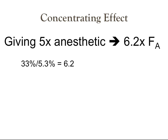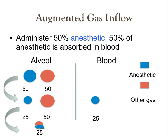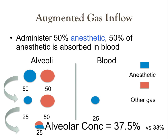With augmented gas inflow, still using 50% anesthetic and 50% uptake, the 25 parts of anesthetic removed from the alveoli are replaced with 25 parts of 50% anesthetic, giving a new alveolar concentration of 37.5% compared to 33% without augmented inflow. Thus, 5 times the FI leads to 6.8 times greater FA, compared to 6.2 times without augmented gas inflow. The cycle of absorbed gas being replaced by fresh gas inflow is continuous and has a finite rate, so this example is a simplification.